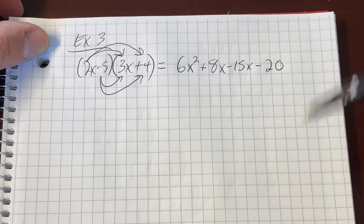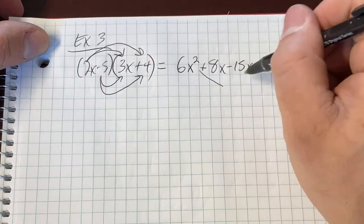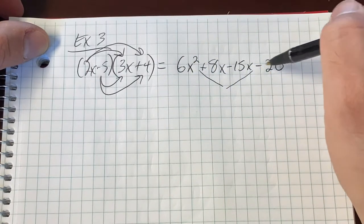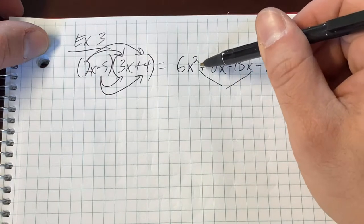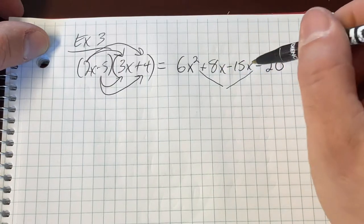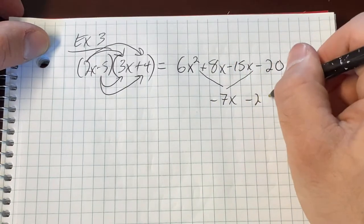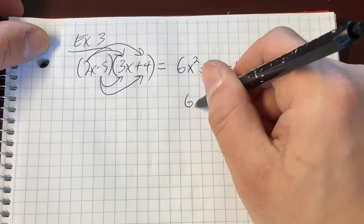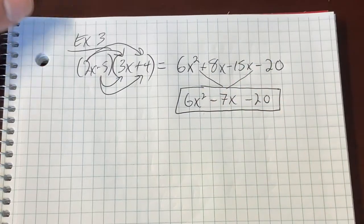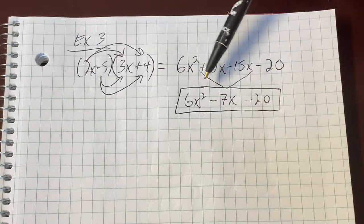Now we're not finished. Why not? Because of what we learned last week, we've got friends right here that can combine. 6x squared doesn't have any friends. The negative 20 doesn't have any friends. But this 8x and negative 15x, they are certainly friends. 8x minus 15x is going to be negative 7x. And then we have our minus 20 at the end. And we have our 6x squared in the front. And we have now successfully multiplied these two binomials and simplified what we got.